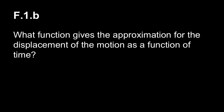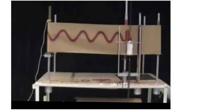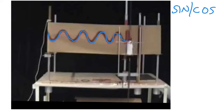Now we've looked at the graph. We want to see what function actually gives us the approximation for displacement as a function of time. The graph is oscillating, weaving up and down — that should remind you of a sine or cosine function. We refer to something that's either sine or cosine as sinusoidal, so this is a sinusoidal function.